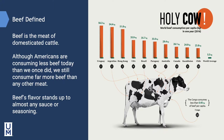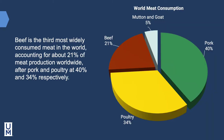Beef is the meat of domesticated cattle. Although Americans are consuming less beef today than we once did, we still consume far more beef than any other meat. As you can see from a 2016 survey, the United States consumed roughly 25.9 kilograms per person. Beef's flavor stands up to almost any sauce or seasoning, which is one of the reasons it's so popular. Beef is the third most widely consumed meat in the world, accounting for about 21% of meat production worldwide, after pork and poultry at 40% and 34% respectively.